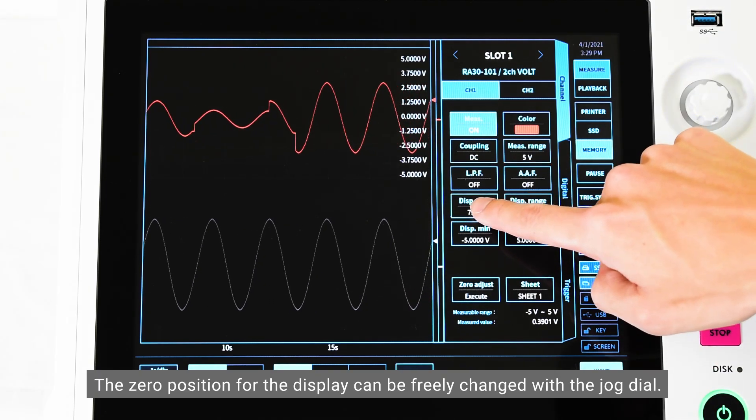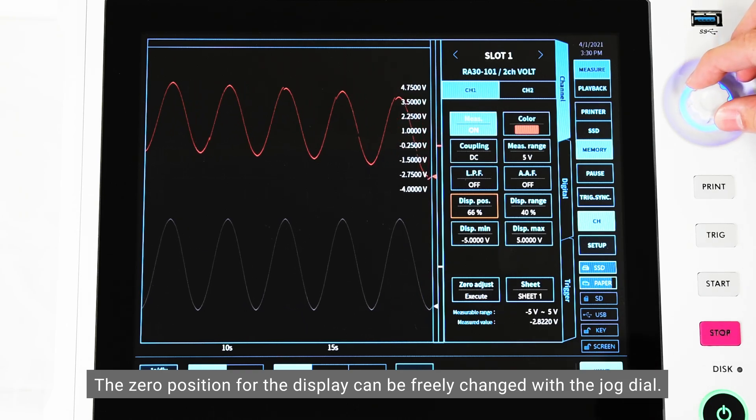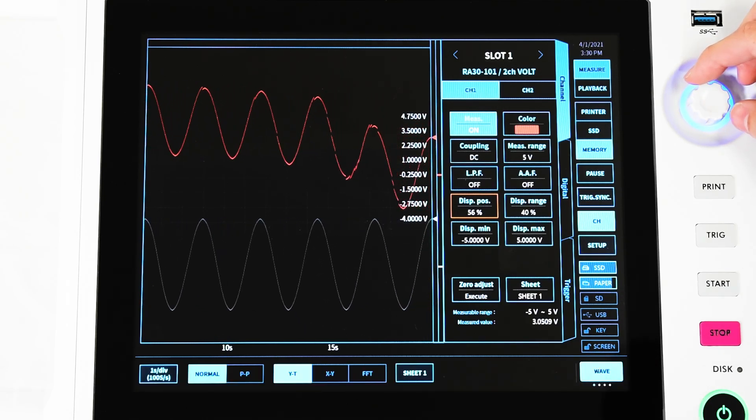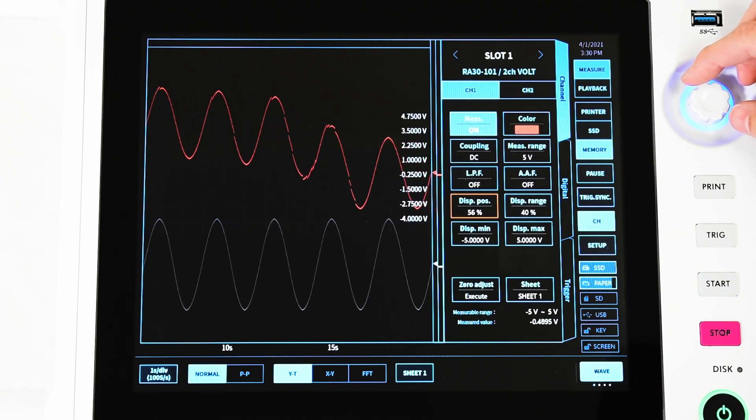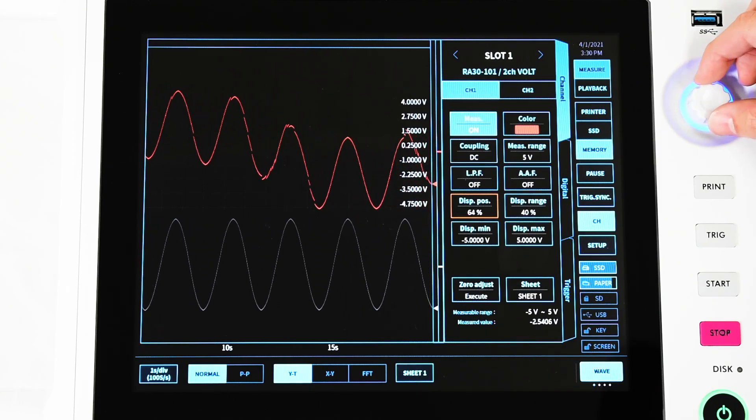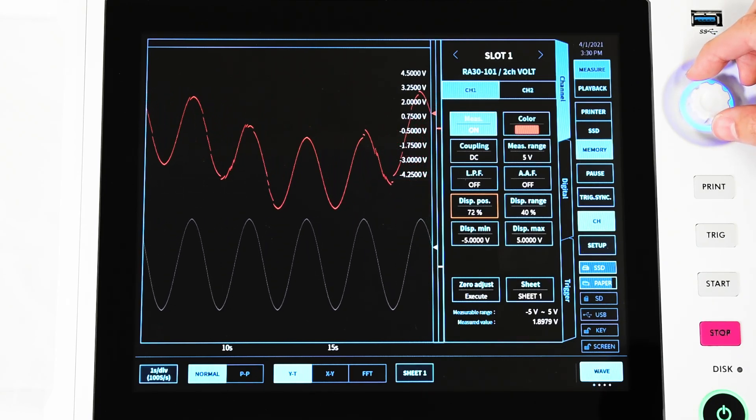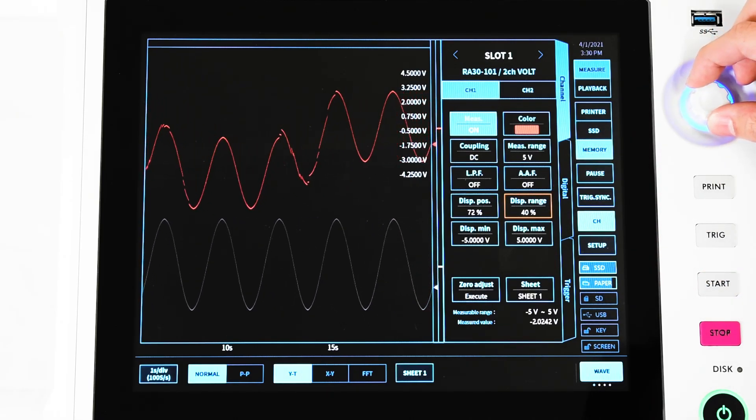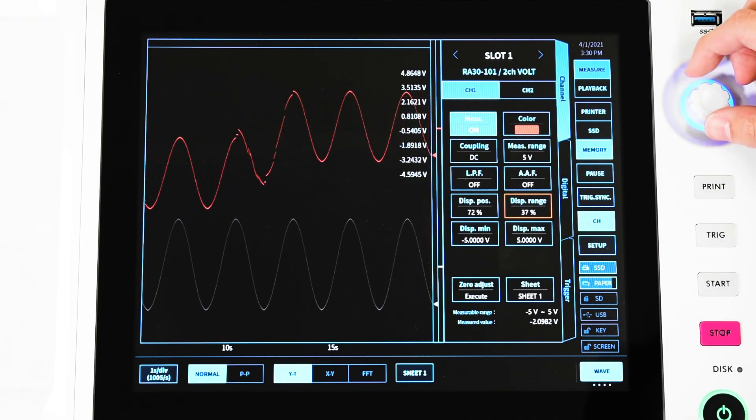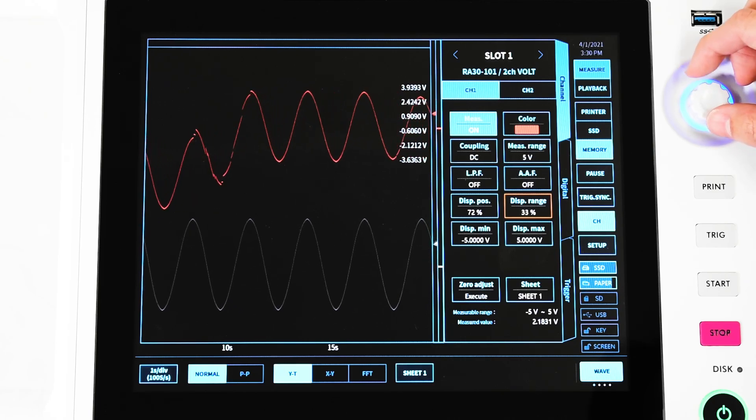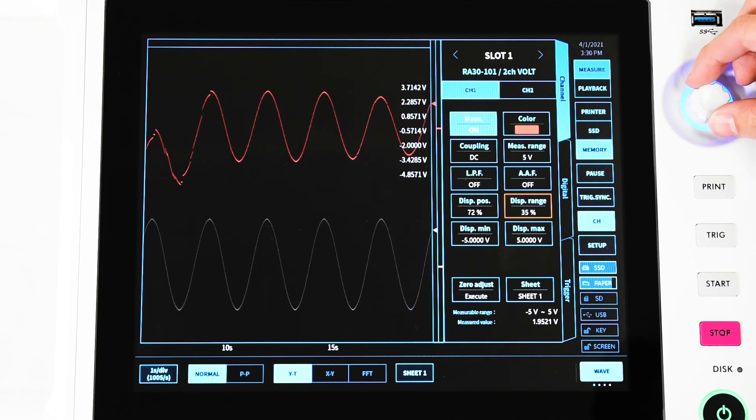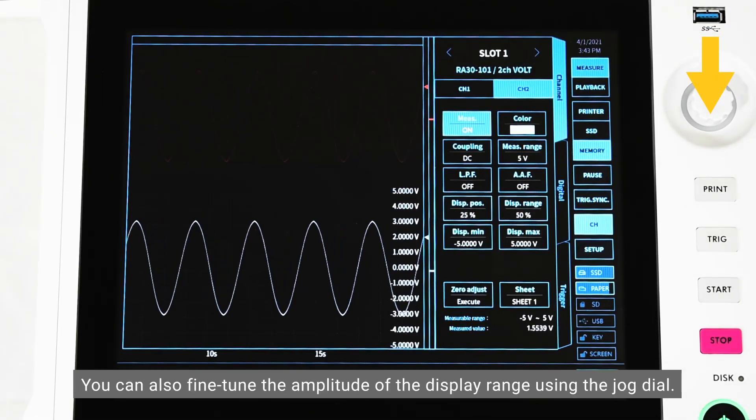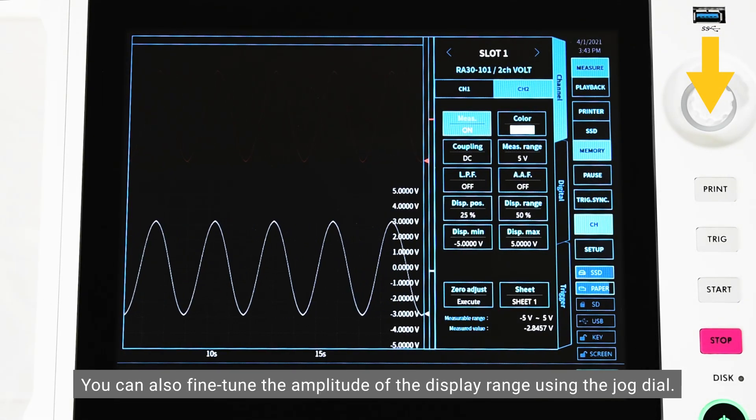The zero position for the display can be freely changed with the jog dial. You can also fine-tune the amplitude of the display range using the jog dial.